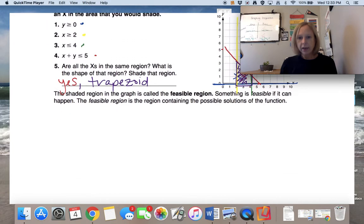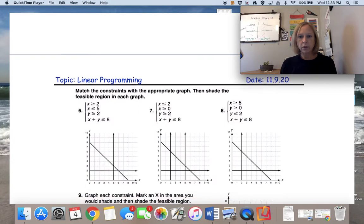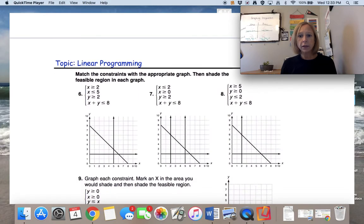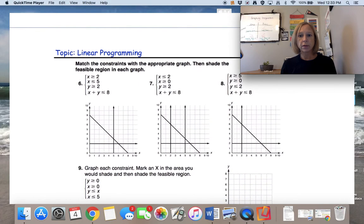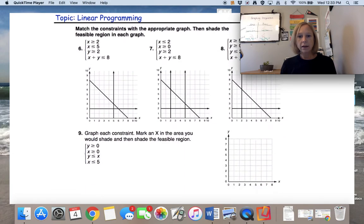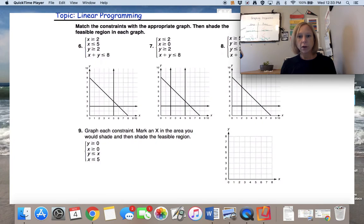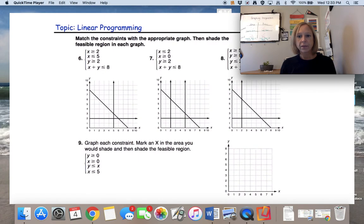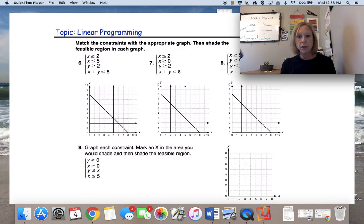I'm going to go ahead and have you pause the video here in a moment. And what I'd like you to do is work through this part of the notes. You're going to match each set of constraints with the correct graph, and shade the feasible region. And then for number nine, you are going to graph and find the feasible region. So go ahead, work on that, and pause the video, and come back and check your answers.